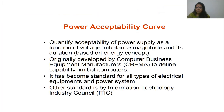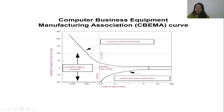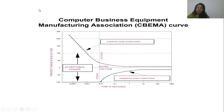Power acceptability curves define how we know if the quality of power is acceptable. These are defined by CBEMA (Computer Business Equipment Manufacturers) and the Information Technology Industry Council (ITIC), as these represent the most sensitive equipment. The CBEMA curve has two boundaries on a plot where the y-axis is percentage change in voltage and the x-axis is time on a logarithmic scale (from 0.0001 second up to 1000 seconds).